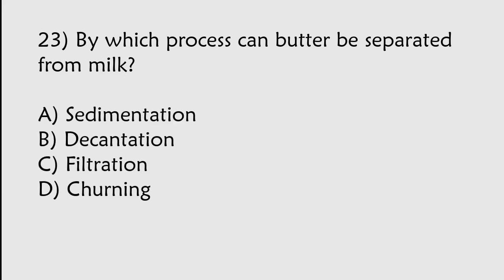By which process can butter be separated from milk? Sedimentation, Decantation, Filtration, Churning. The correct answer is option D. Churning is the process by which butter can be separated from milk.